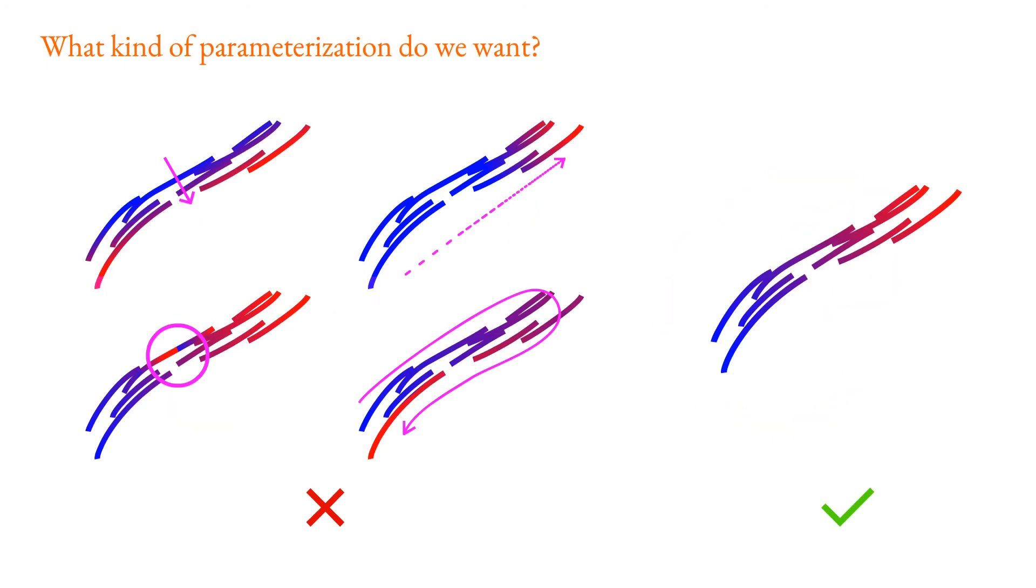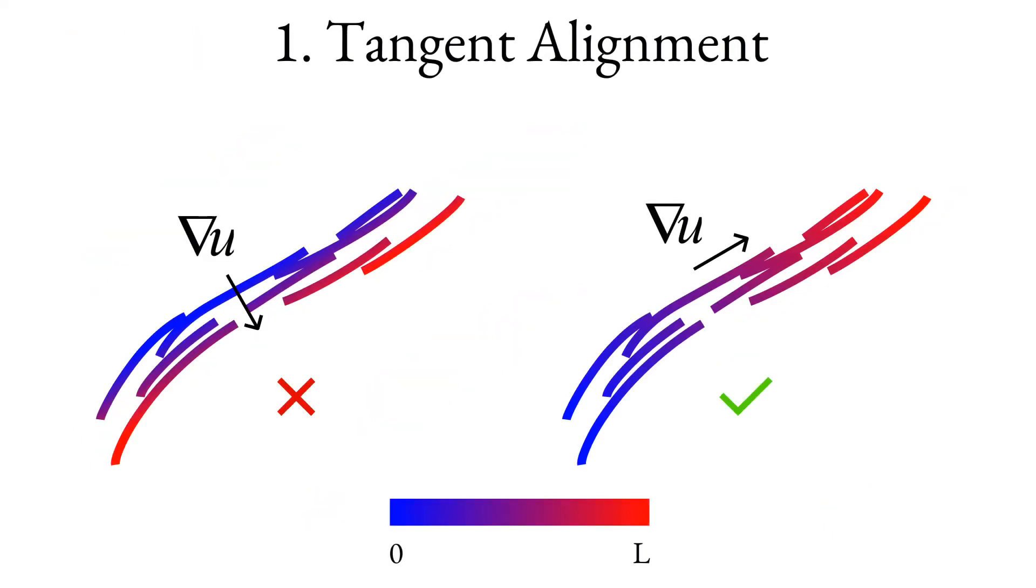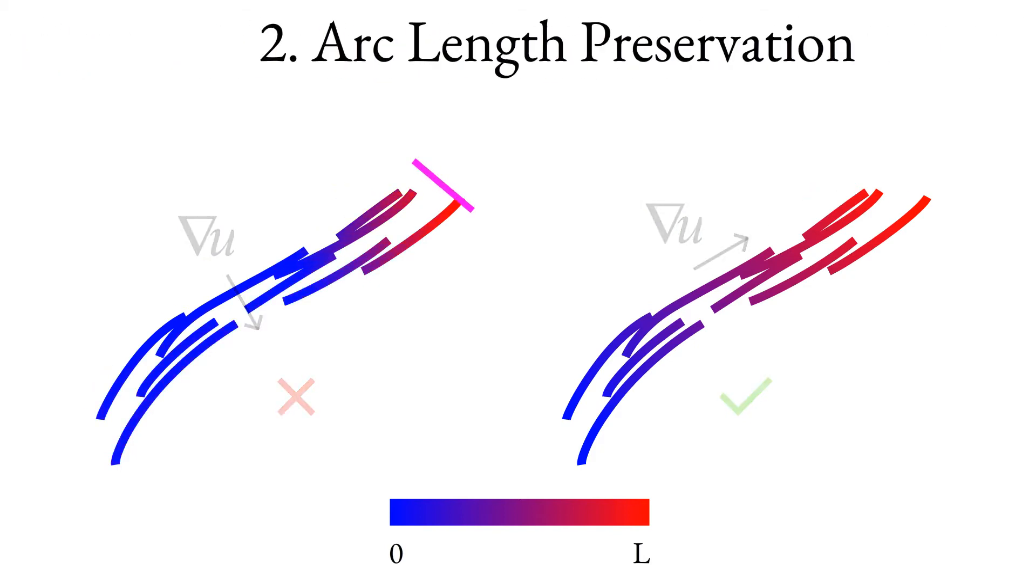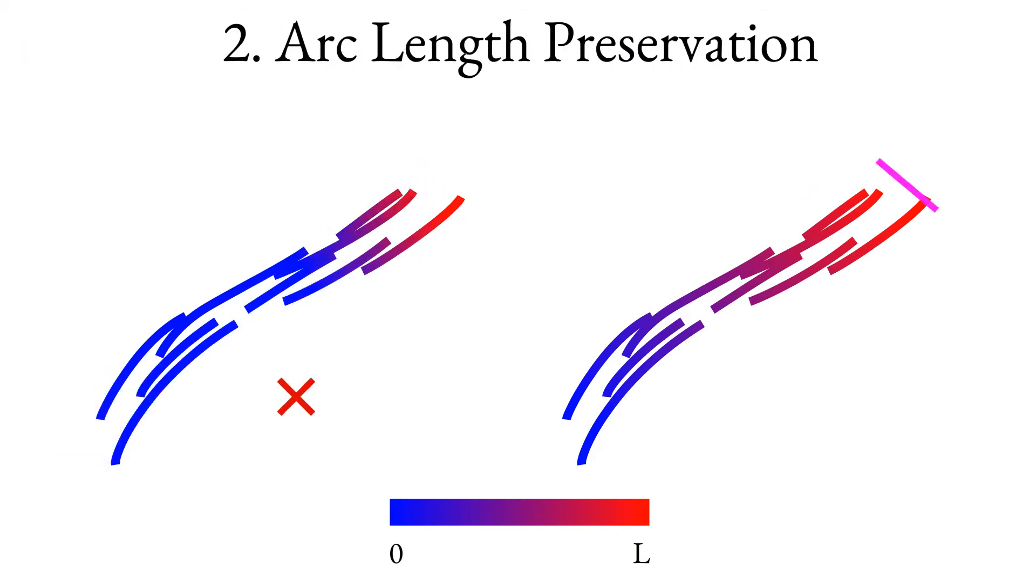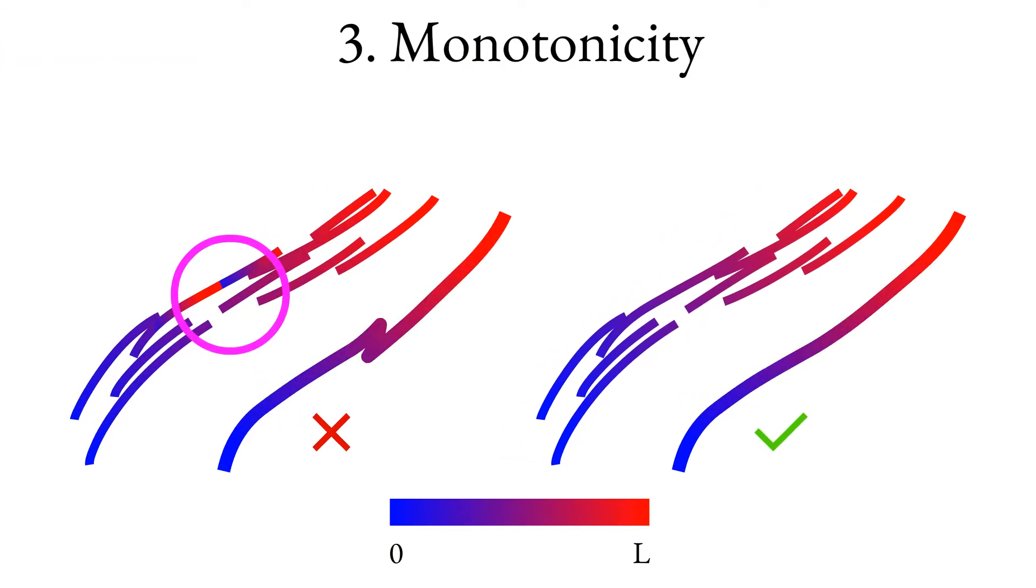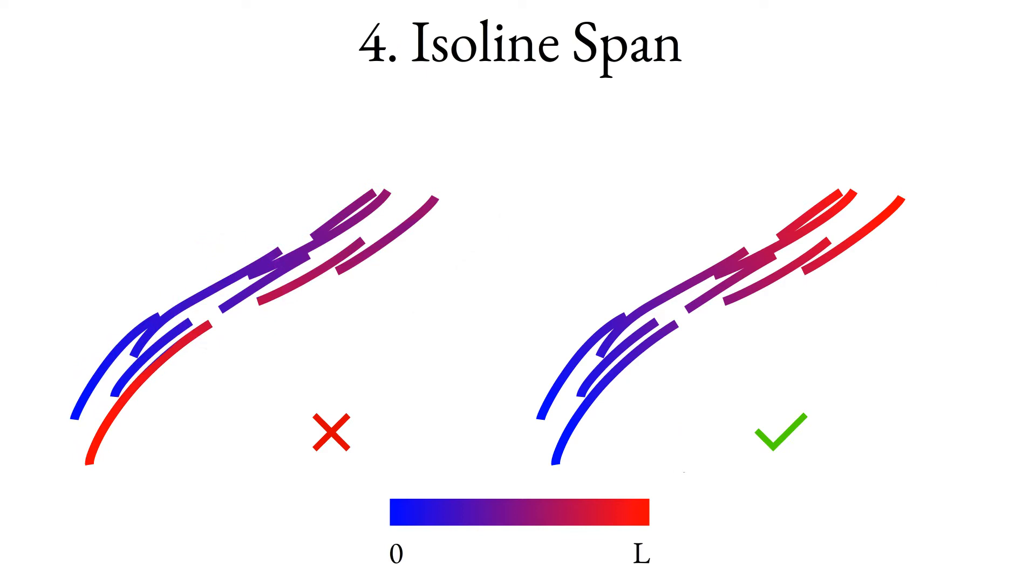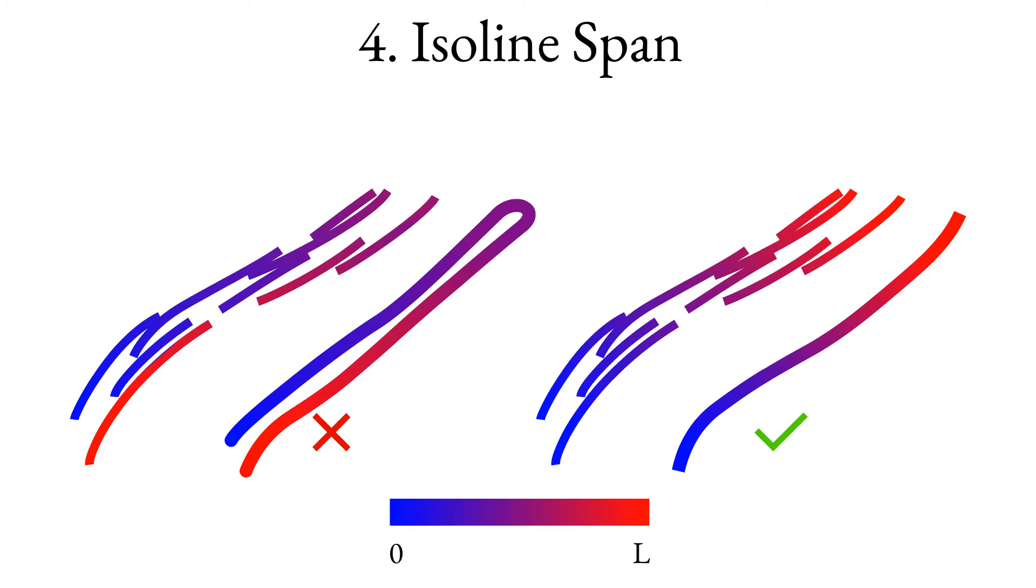The parameterization we seek must satisfy four key properties. The gradient of the parameterization should be aligned with the tangents of the cluster strokes. The parameterization should be arc-length preserving and strictly monotone. And last but not least, at points on different strokes that viewers perceive as adjacent within the strip, the parameter values should be similar. We refer to this property as iso-line span.